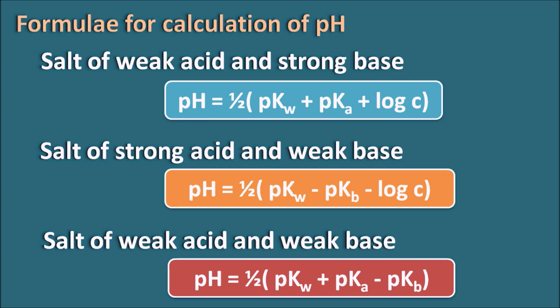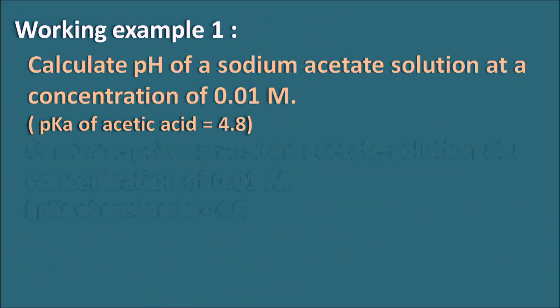These three formulas can be used to calculate the pH for different types of salt solutions. Let us go through them one by one. Working example 1: Calculate the pH of a sodium acetate solution at a concentration of 0.01 M. The pK_a of acetic acid is 4.8.